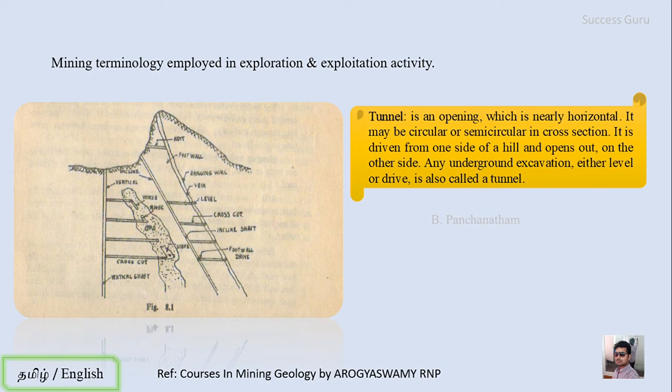The next term is tunnel — an opening that is nearly horizontal, circular or semi-circular in cross-section, driven from one side of the hill and opening out on the other side. Any underground excavation whether level or drive is generally called a tunnel. It can also be used in unstratified deposits along with drives and cross cuts.